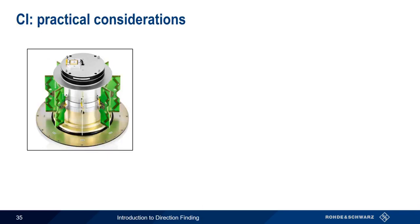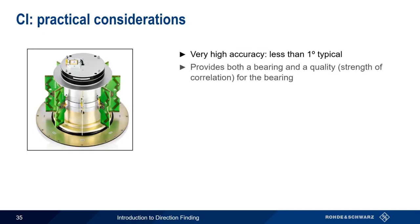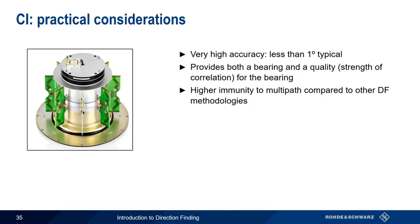So why use correlative interferometry over less technically demanding methodologies such as Doppler or Watson-Watt? Correlative interferometry has several significant advantages. The first is very high accuracy, usually 1 degree or less in an ideal environment — no other direction-finding methodology can produce bearings with this level of accuracy. Additionally, correlative interferometry provides both a bearing as well as a bearing quality, something no other DF methodology can provide. Because CI compares phase differences on multiple elements simultaneously, it offers higher immunity to multipath compared to other DF methodologies. And lastly, cross-polarization of signals does not affect the accuracy of CI-based systems, which was one of the main drawbacks of Doppler-DF.